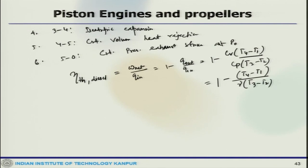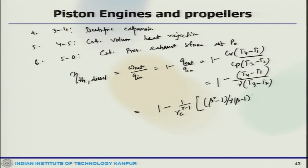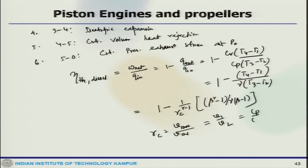After rearrangement, the thermal efficiency is 1 by R_C to the power gamma times (beta^gamma − 1) by gamma(beta − 1), where R_C is V_max by V_min (essentially V_1 by V_2), gamma equals C_p by C_v, and beta is V_3 by V_2. This is the thermal efficiency of the Diesel cycle. We will stop here and continue the discussion in the next lecture. Thank you.